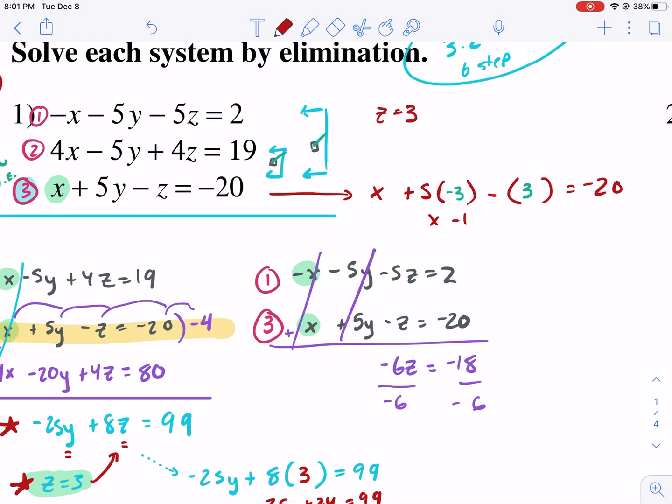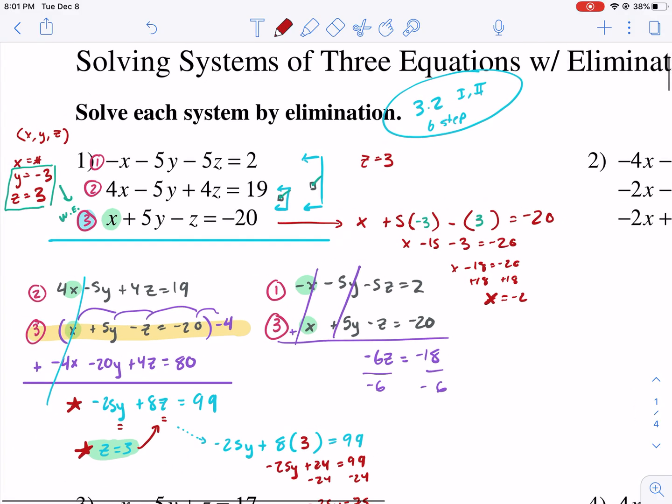Then we have y, which we have a value for. Then we have z, which we have a value for, equals negative 20. I'm going to use green because we like had those values already. So we have negative 3 and then positive 3. And now we're going to work this out and solve for x and we're done. So we get x minus 15 minus 3 equals negative 20. We get x minus 18 equals negative 20. Add 18 to both sides. x equals negative 2. So we're done. We have our ordered triple, we have all the values of x, y, and z. Negative 2 comma negative 3 comma 3. And that's our final answer.